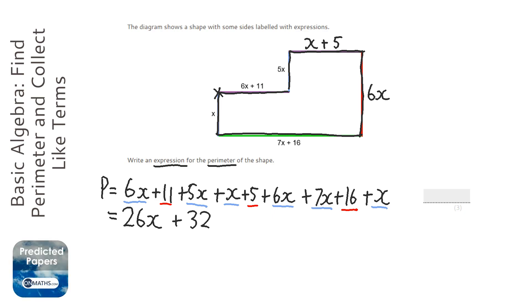Okay, so the perimeter is going to be 26x plus 32. Now a different way I could have done this is just focused on this one and this one and doubled them. Now let's have a look and see how that works.